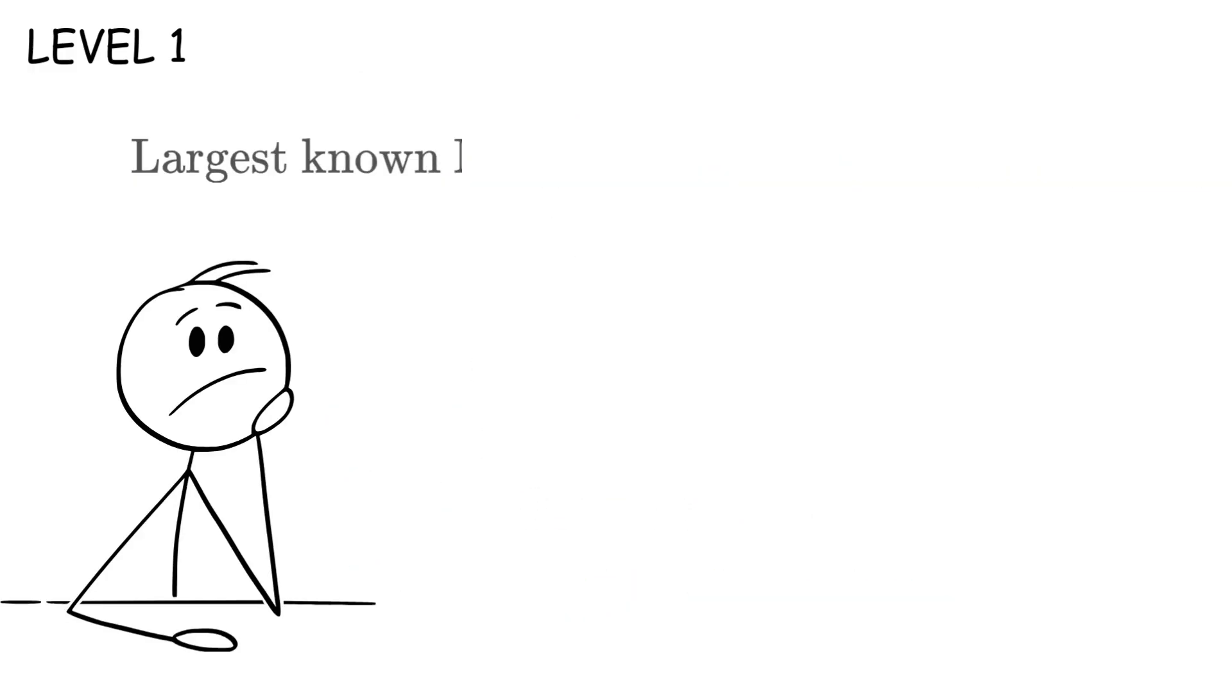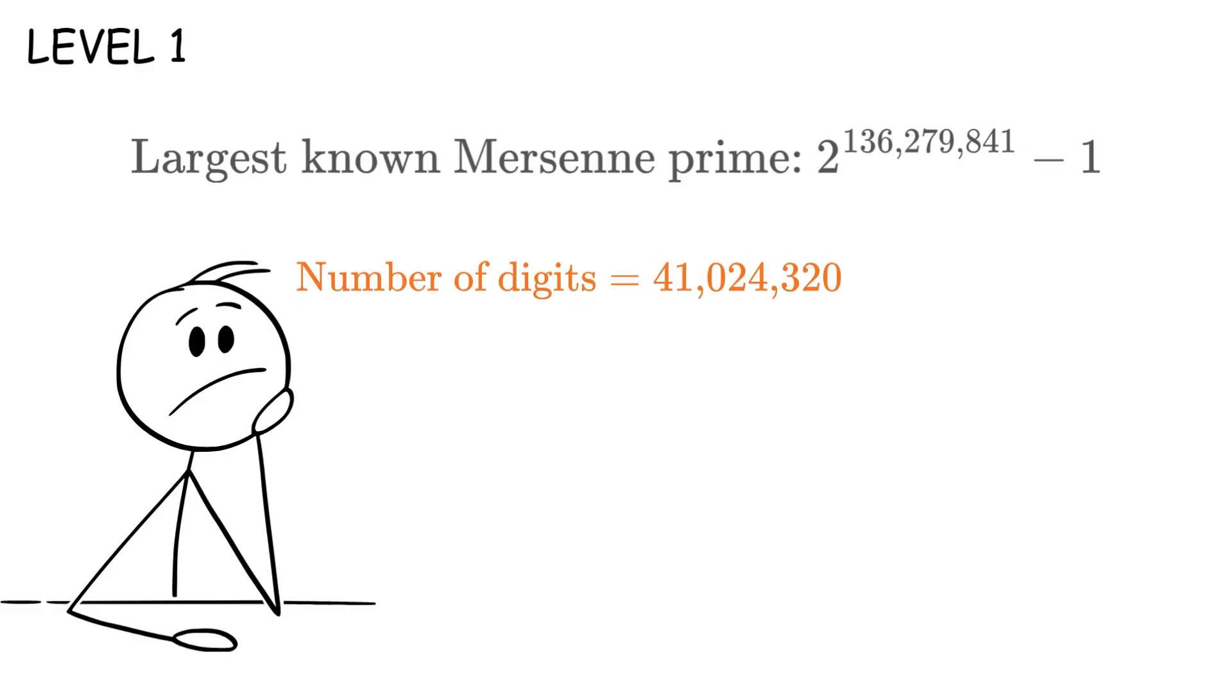The largest known Mersenne prime is 2 raised to the power of 136,279,841 minus 1. This number has 41,024,320 digits. If you tried to write it out, one digit per second, it would take you over a year of non-stop writing.